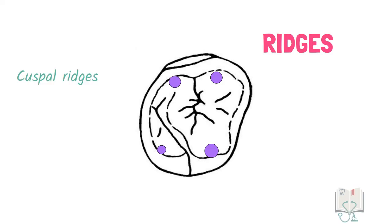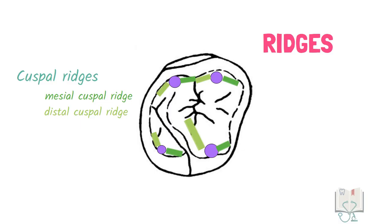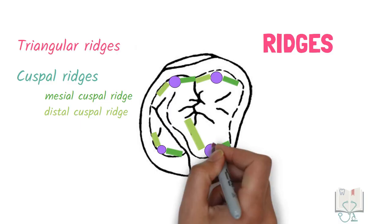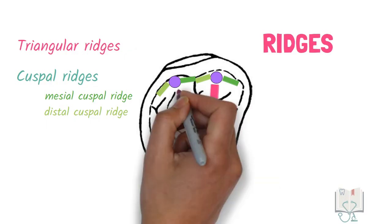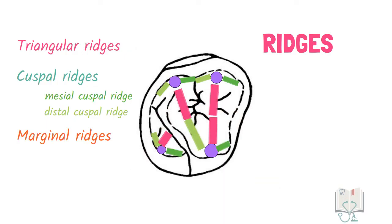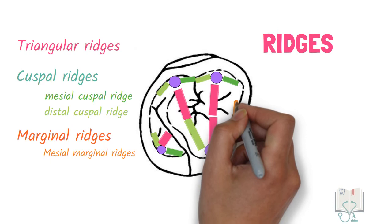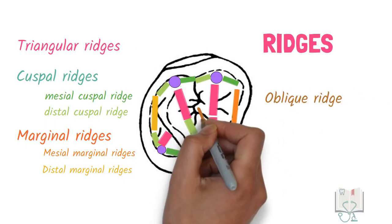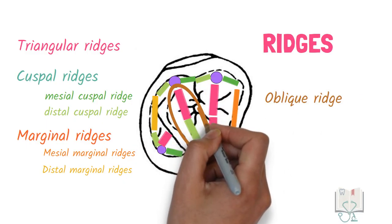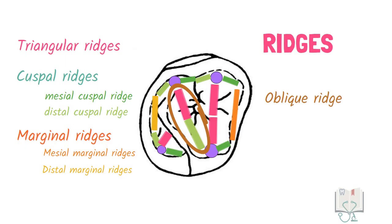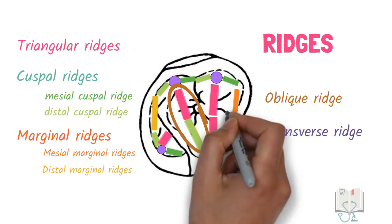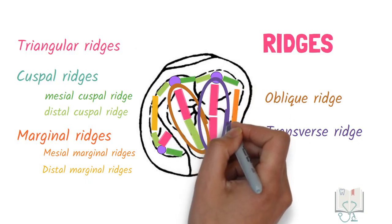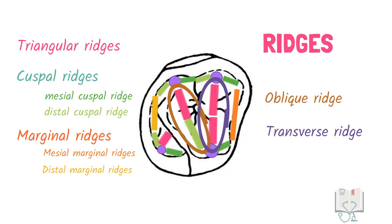Ridges: all four cusps have two cuspal ridges each — mesial cuspal ridge and distal cuspal ridge. All four cusps have one triangular ridge running from the cusp tip towards the center. There are two marginal ridges: the mesial marginal ridge on the mesial border and the distal marginal ridge on the distal border. The oblique ridge is formed by the combination of the distal ridge of the mesiolingual cusp and the triangular ridge of the distobuccal cusp. The transverse ridge is formed by the combination of the two triangular ridges of the mesiolingual cusp and mesiobuccal cusp.